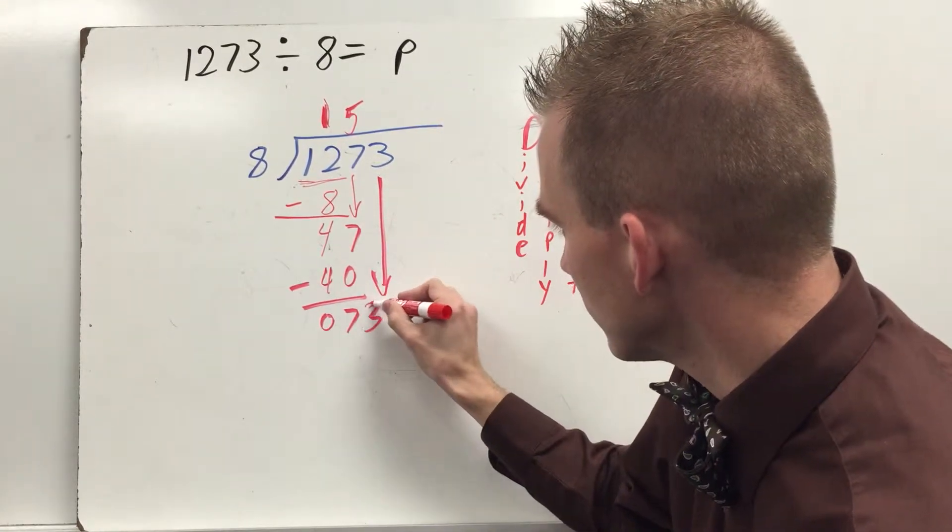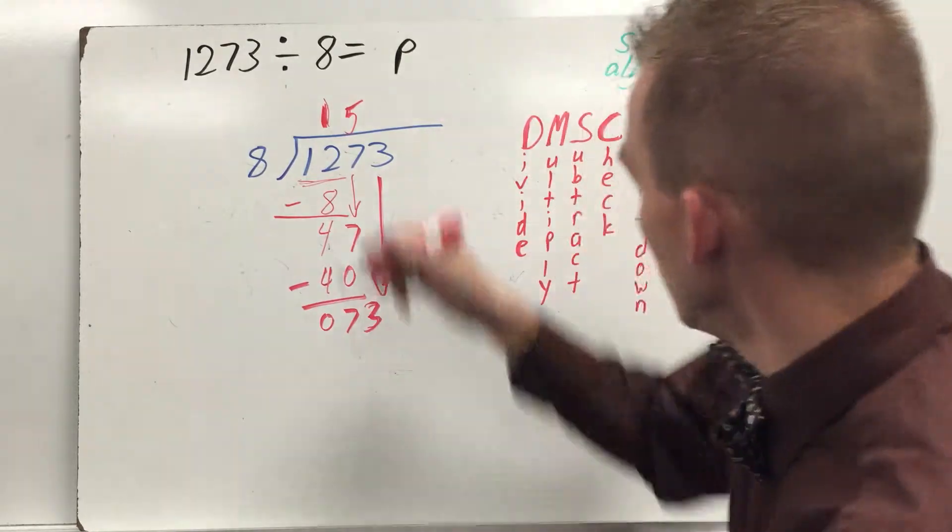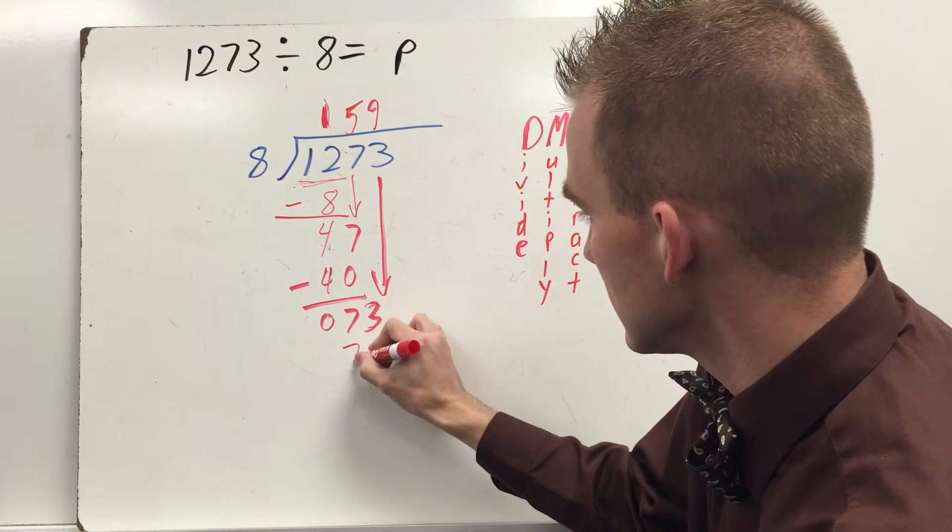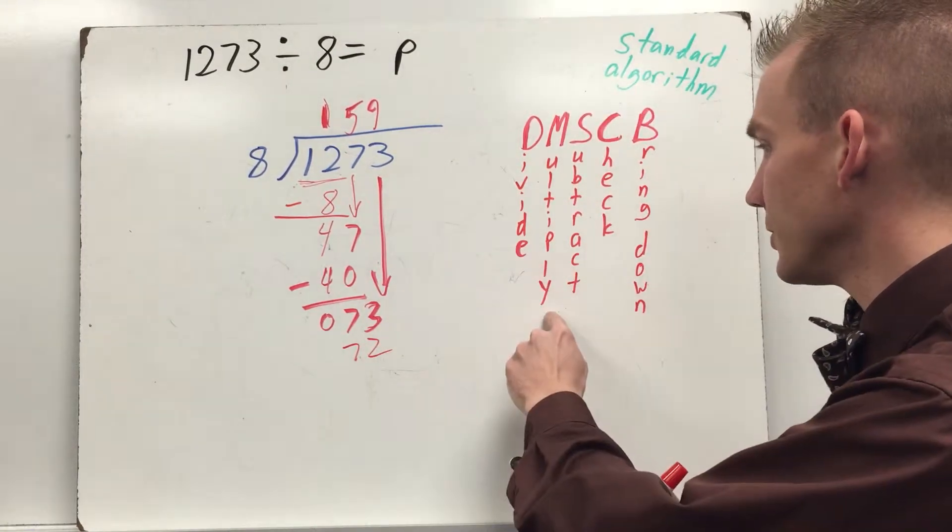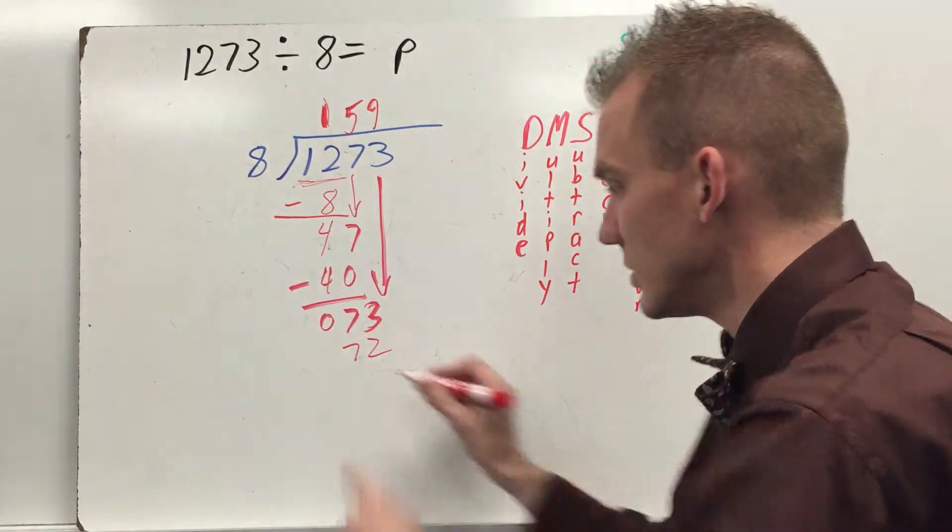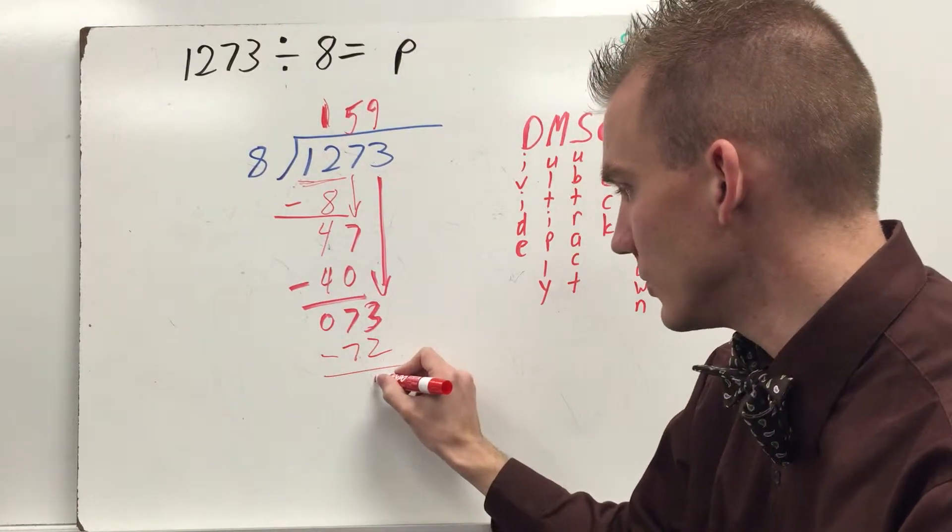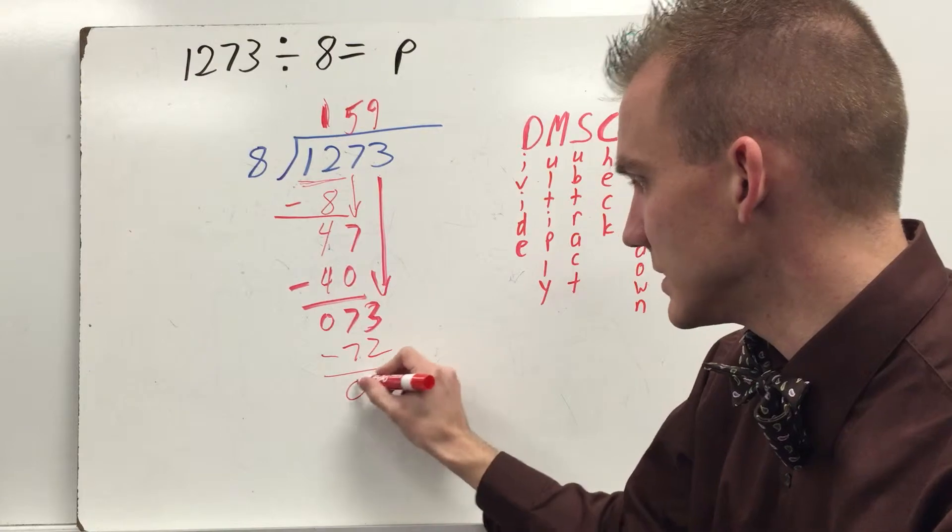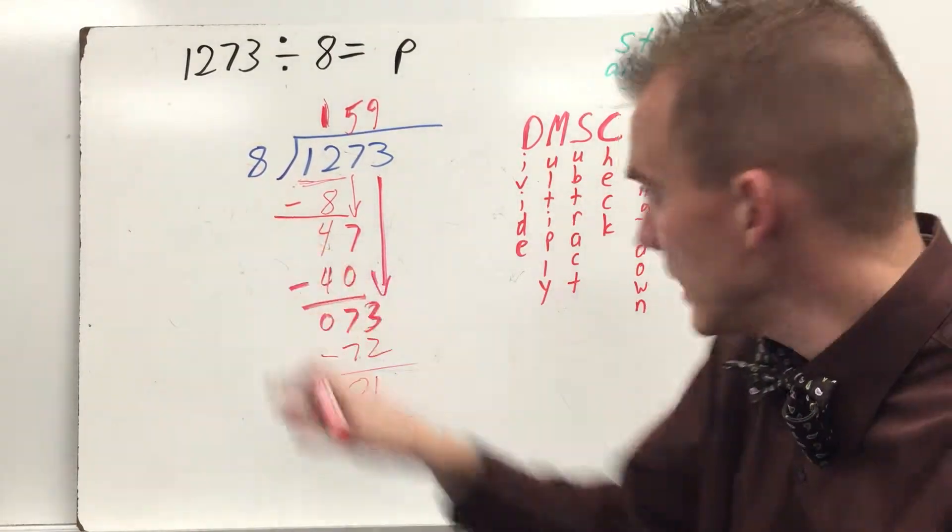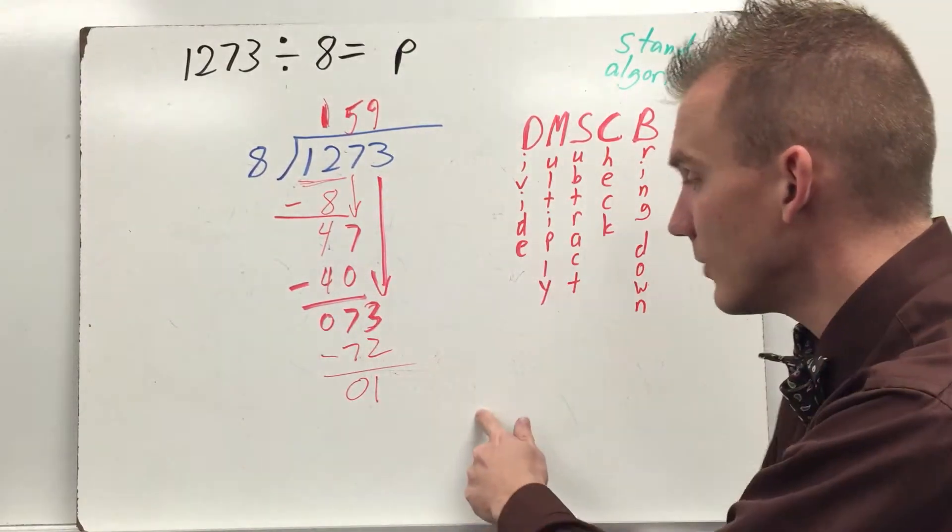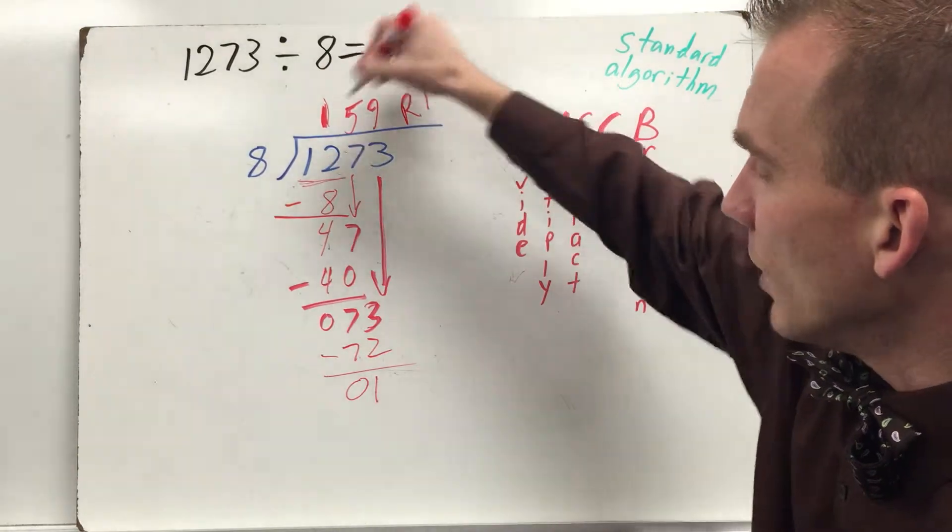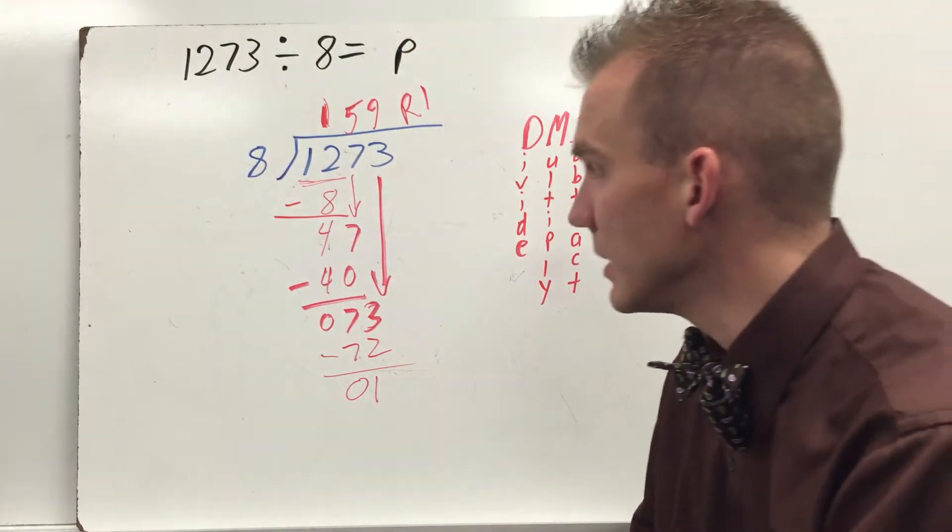Now I can bring down 3. And my first thought was 73, 8 times 9 is 72. I know that. So I'm going to put the 9 up here. 9 times 8 is 72. So I've divided. I've multiplied. 8 goes into 73 9 times. 9 times 8 is 72. I now subtract. 3 minus 2 is 1. 7 minus 7 is 0. I check. 1 is less than 8. I have nothing more to bring down. Which means I'm done. But I have 1 left over. And that becomes our remainder. 159 remainder 1. So I've solved the division problem.